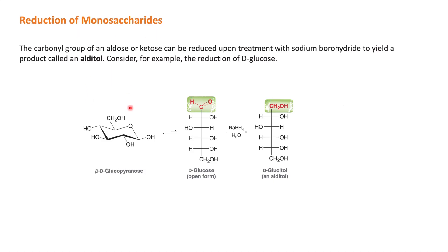Next is reduction of monosaccharides. In the cyclic form of beta-D-glucopyranose, there is no visible double bond or carbonyl, but in the open-chain form there is an aldehyde group. A very small fraction of glucose remains in equilibrium with this open-chain form. When treated with sodium borohydride, the aldehyde is reduced to an alcohol, giving D-glucitol. More glucopyranose in cyclic form then converts to open-chain form to maintain equilibrium, and the process continues until completion.